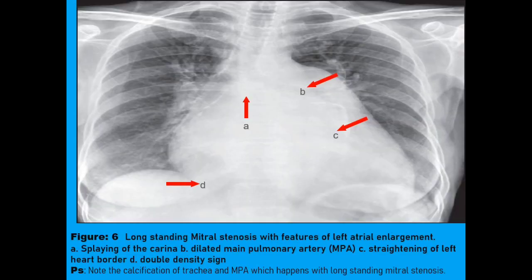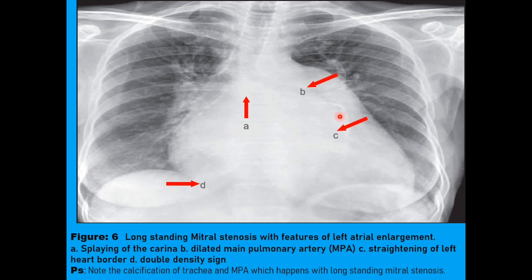This patient had long-standing mitral stenosis with features of left atrial enlargement. There is splaying of the carina. We can see that the carina is splayed. There is a dilated main pulmonary artery — that is the grossly dilated pulmonary artery. There is straightening of the left heart border and a double density sign. We can also see calcifications — these streaks represent tracheal calcifications. And we can also see calcifications of the main pulmonary artery. This happens in patients with untreated long-standing mitral stenosis.